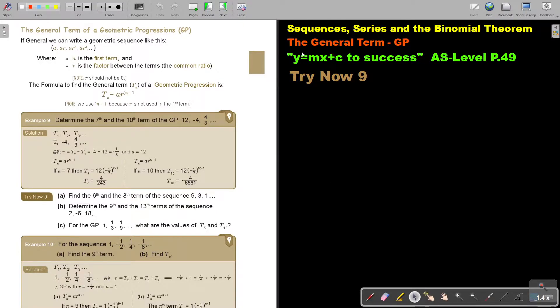In this video, we are still going to look at sequences, the general term, but we are going to focus on geometrical progressions. You will find this on page 49 in the Namibia AS level mathematics textbook, Y equals MX plus C to success.